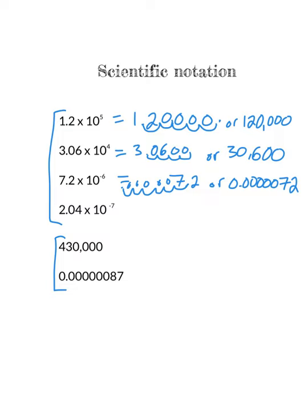2.04 times 10 to the negative 7th — I give myself room for placeholders and move it 7 places to the left: 1, 2, 3, 4, 5, 6, 7. There are 6 zeros before the 2 and the 4, so that's 0.000000204.